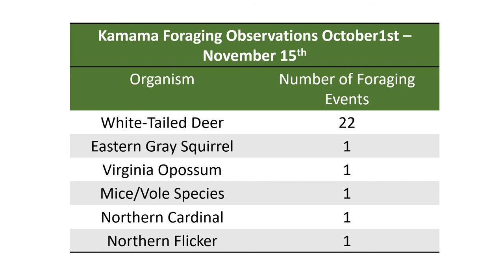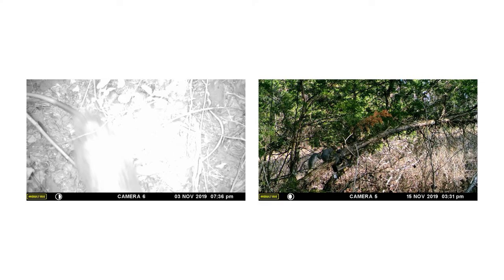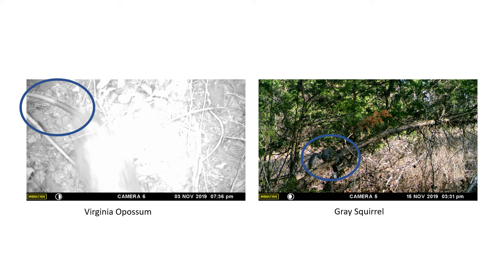So far we've noticed 22 foraging events of white-tailed deer, and we've also seen eastern gray squirrel, Virginia opossum, differing mice and vole species, northern cardinal, and northern flicker. These cameras can be really difficult to work with because animals aren't posing for you — you typically only see the snout as they come into view or the tail as they quickly move away. We were able to identify the Virginia opossum based on the banding on its tail. In contrast, the gray squirrel is very clearly identifiable, so we get a whole range of image qualities.